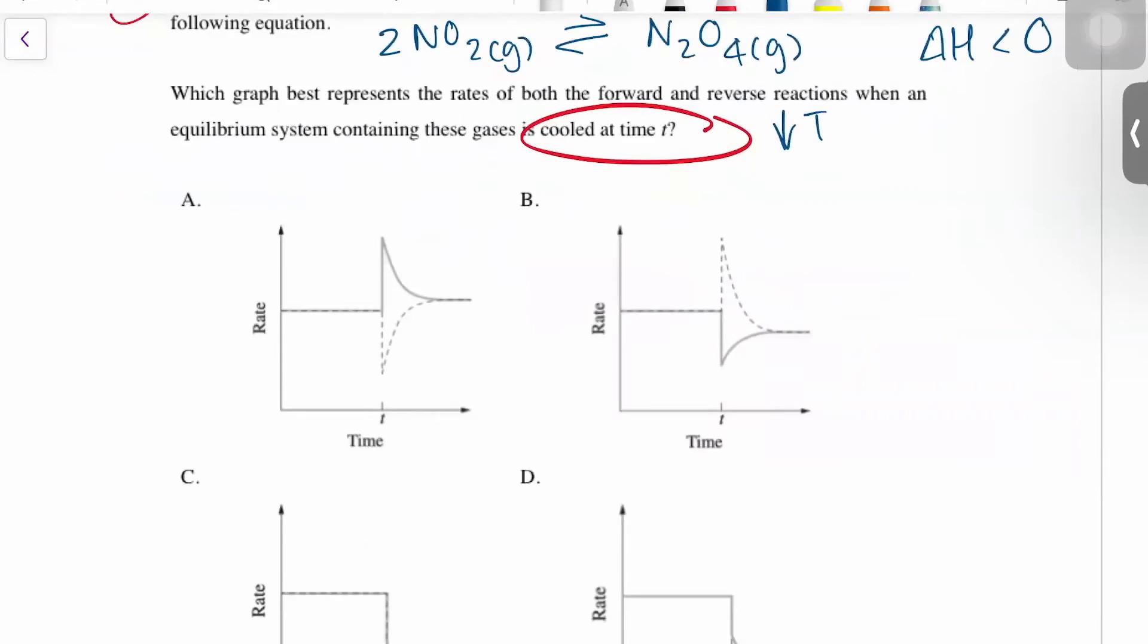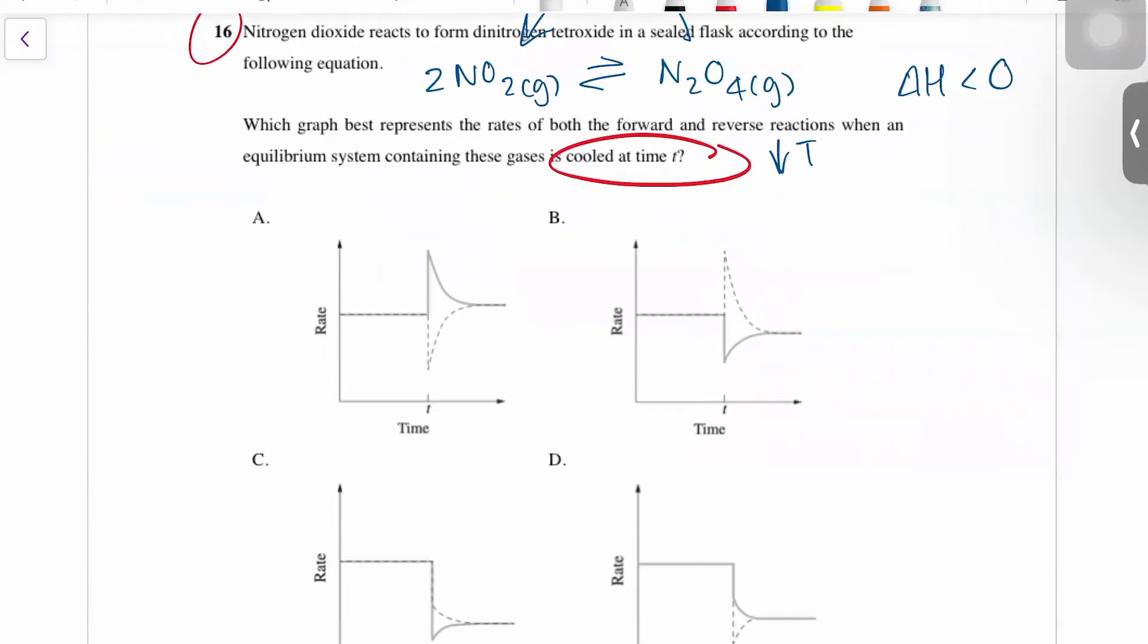Now, there's a few general rules you want to know just so that it's easier for you to interpret these graphs. Anytime you're decreasing temperature, according to collision theory from year 11 module 3, your reaction rate is going to decrease. This is regardless of whether it's endothermic or exothermic. If you are decreasing temperature, the reaction rate is going to decline.